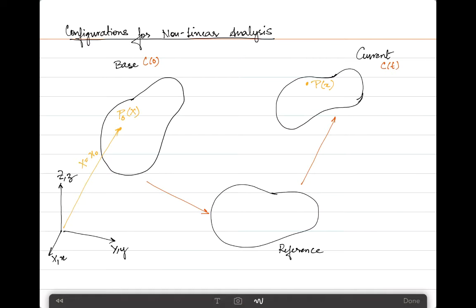Therefore, if we know these vectors, we can easily calculate the distance between the base and current configuration. This is given as U equals X minus capital X, where U represents